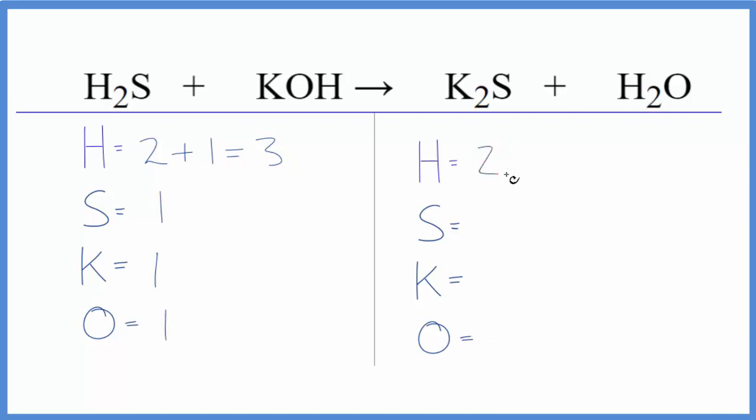On the product side, we have two hydrogens, one sulfur, two potassium atoms, and one oxygen. I'll start by balancing the potassium atoms. I think that'll give me an even number of hydrogens, which would be very helpful.